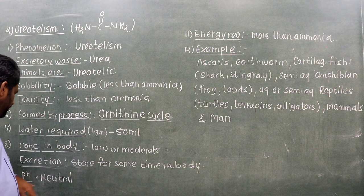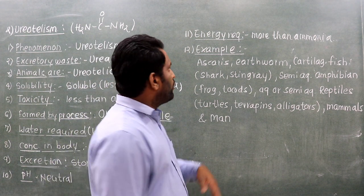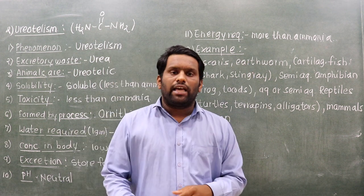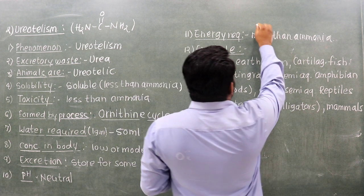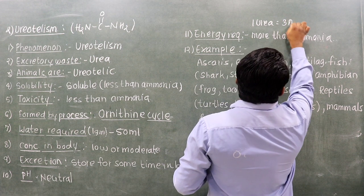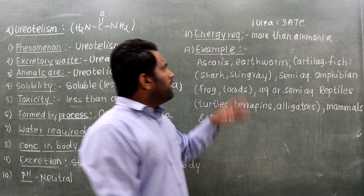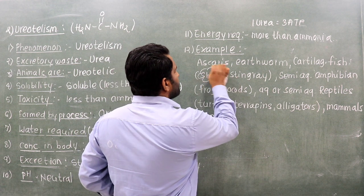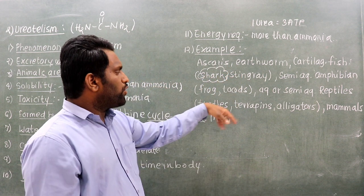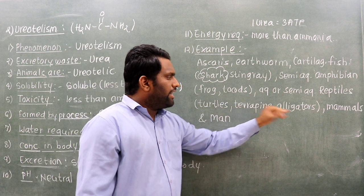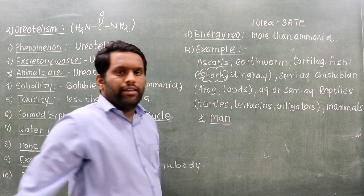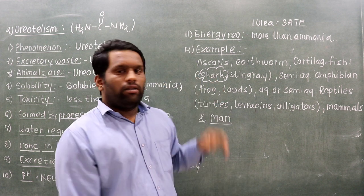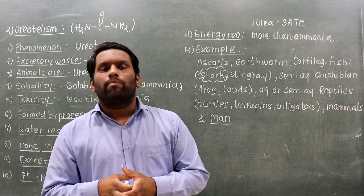Urea can be stored for some time in the body. Its pH is neutral. Energy is required to produce urea — forming one urea molecule requires 3 ATP (adenosine triphosphate). Examples of ureotelic animals include Ascaris, earthworm, cartilaginous fish such as sharks and stingrays, semi-aquatic amphibians like frogs and toads, aquatic or semi-aquatic reptiles like turtles, terrapins and alligators, mammals, and humans.